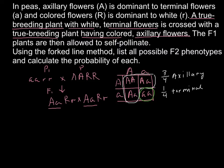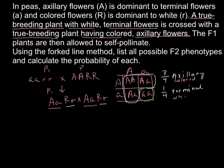When we cross the R alleles — capital R small r with capital R small r — both are heterozygous, so the outcome is the same. Three quarters of the plants will have colored flowers, and one quarter will be white. Now we have all the initial information needed to solve this problem using the forked line method.